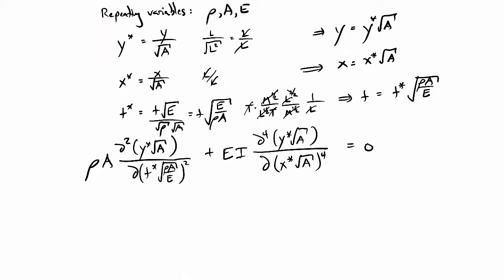Now we can simplify this equation a little bit further. When we take the derivatives, the constants can come outside the derivative. So I'll have rho times A times the square root of A, and in the denominator it's the square root of rho A over E but that's squared, so I have to take that out as rho A over E times d² y star over d(t*)².